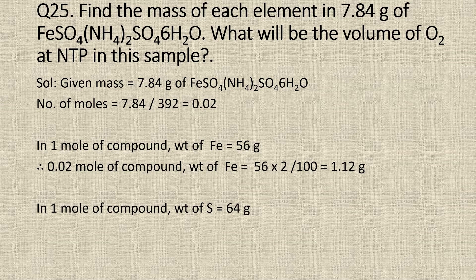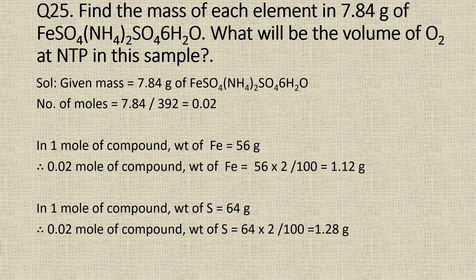In 1 mole of ferrous ammonium sulfate, the number of moles of sulfur is 2. Therefore, the weight of sulfur is 64 grams in 1 mole of the compound. Therefore, in 0.02 moles of the compound, the weight of sulfur is 64 into 0.02, which is equal to 1.28 grams.